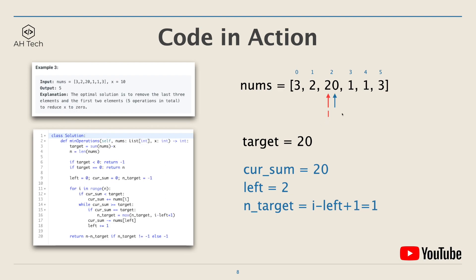When the left pointer is moved to index 2, current sum becomes 20, which equals target. We've found a subarray whose sum equals target, so we update n_target — which is right minus left plus 1 — and in this case the size of the subarray is 1. After that, we move the left and right pointer to the next element, so current sum is 1, right pointer is at 3, and n_target is 1. We keep moving the right pointer all the way to the end but don't find another subarray whose sum equals target.